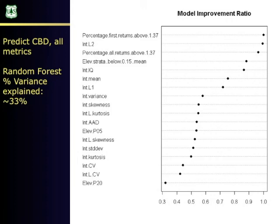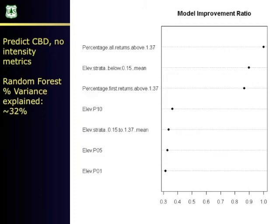For canopy bulk density in the defoliated forest, density metrics are the best predictors — not surprisingly — along with a slew of intensity metrics. There's a big difference in intensity between green trees and defoliated or red trees, and our plots do a good job of sampling the range of mortality, which is why these signals get picked up. When you exclude intensity metrics, density is much more important than height in these models.